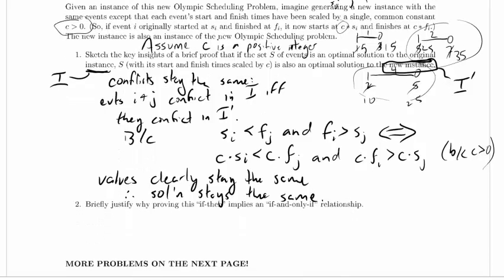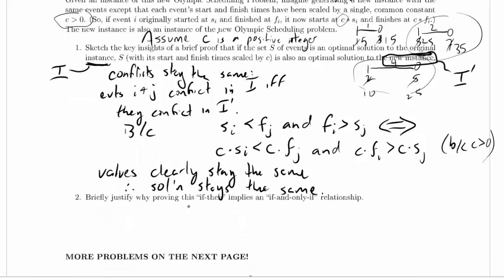Let's take a look at the second problem. Briefly explain why proving this if-then implies an if-and-only-if relationship.